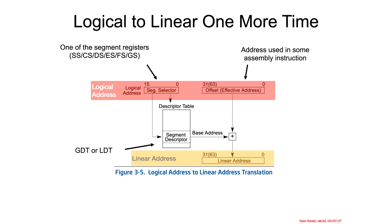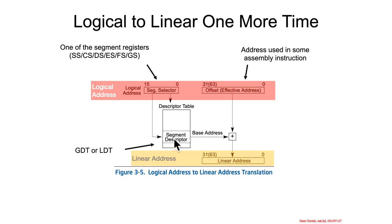One last reiteration of segmentation and the translation of logical to linear addresses: you've got logical addresses, which are a 16-bit segment selector — either in a far pointer or implicitly used by the segment selectors like CS, SS, etc. — plus the typical 64-bit offset. You've got the GDT and LDT, which we'll learn more about in the next section, and those have data about the particular segments used to find a base address and add to the offset to ultimately translate through to a linear address.